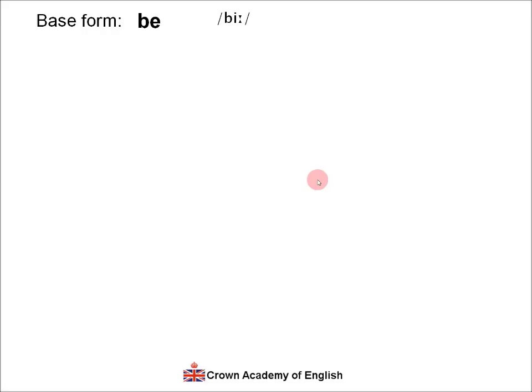The verb 'be' is a special case. It's very irregular and it's quite difficult to explain, so my advice is to watch the video below. And this is in fact the end of the lesson. Here are some other videos which I recommend you watch.